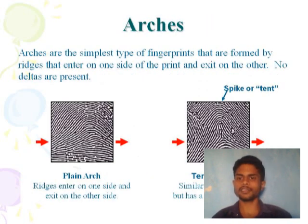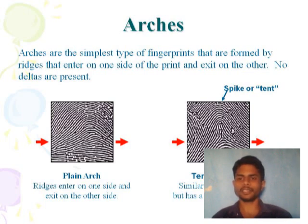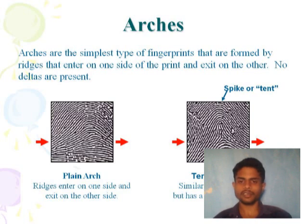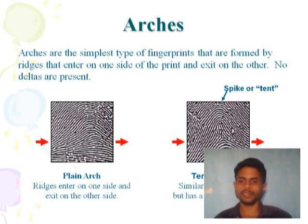Arches are the simplest type of fingerprint that are formed by ridges that enter on one side of the print and exit on the other. No deltas are present in arches. There are two types: plain arch and tented arch. In the plain arch, the ridge enters on one side and exits on the other side directly.